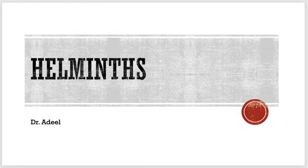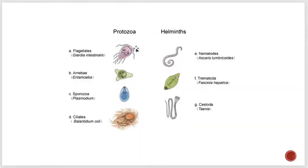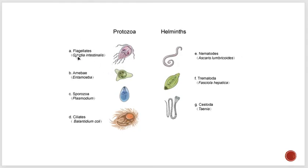There are two groups: one is the protozoa, which you were studying and will study as well, and then there are helminths. Protozoa include amoeba, sporozoa, ciliates, and flagellates — like giardia, entamoeba histolytica, plasmodium — which you have already done. And then there are helminths, which are called as worms.